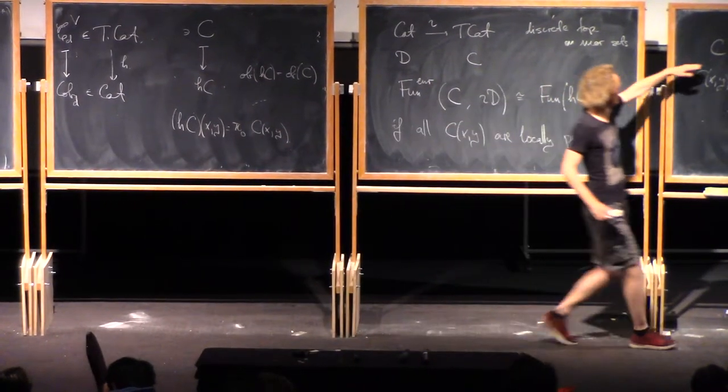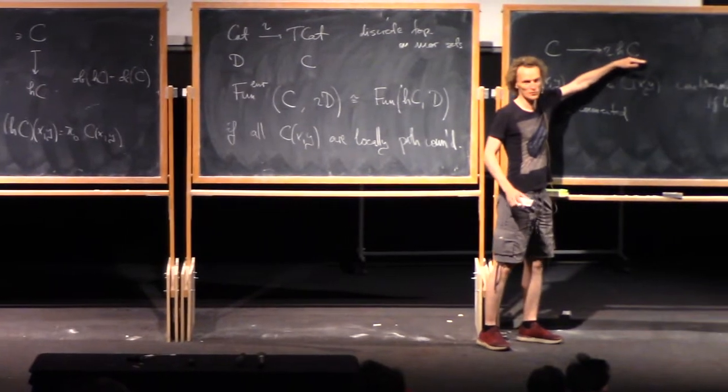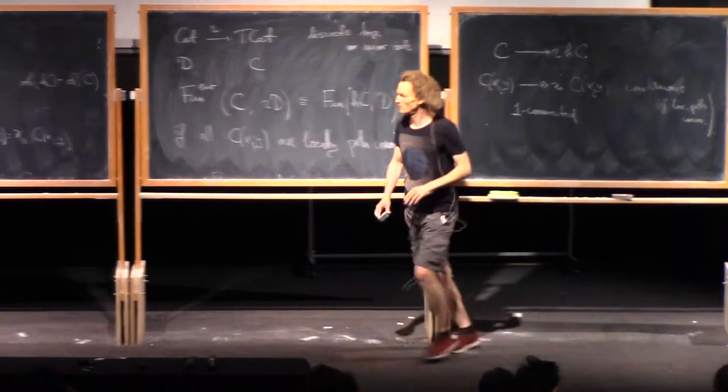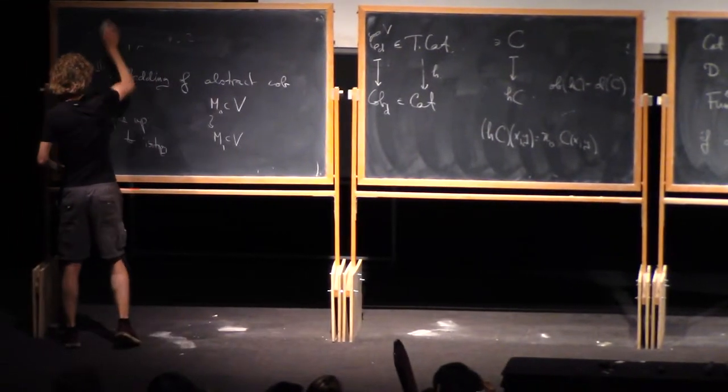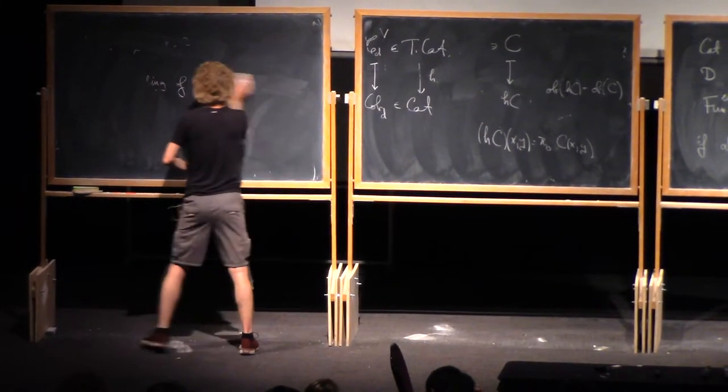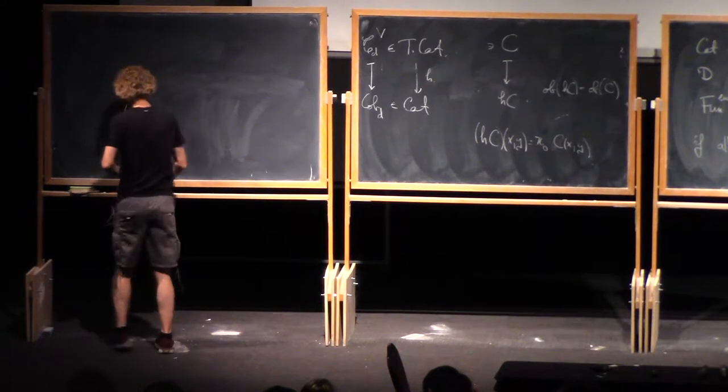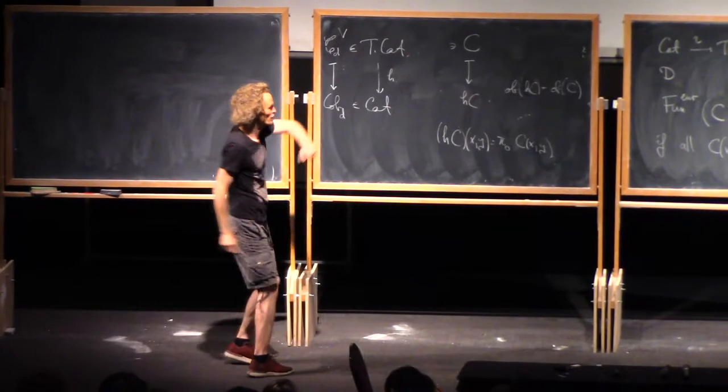So where I'm going is I have this canonical map here. I want to take B of that and ask how connected is it. Turns out it's always two-connected. No matter what topological inverse category you start with. And that's what I was just starting to explain there.